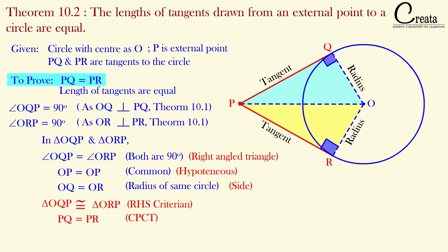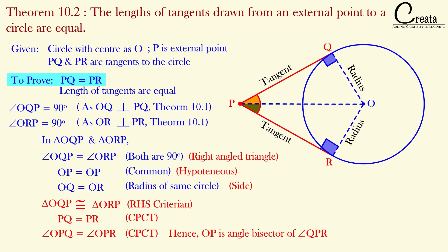Wait — one important thing is pending, do not close this video. Both triangles are congruent to each other, which means all sides and all angles will be equal. Congruent triangles are exactly a copy-paste of each other, so all sides and all angles are equal. This means these two angles — the angles at P in each triangle — will also be equal to each other. In other words, OP is the angle bisector of angle QPR. This is an important concept that will be used in solving many questions, so note it down.